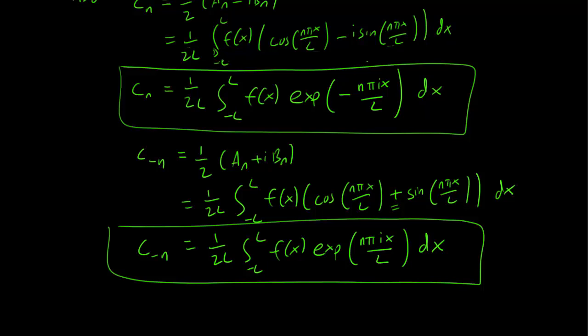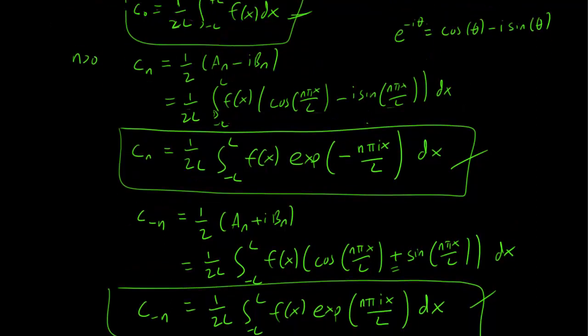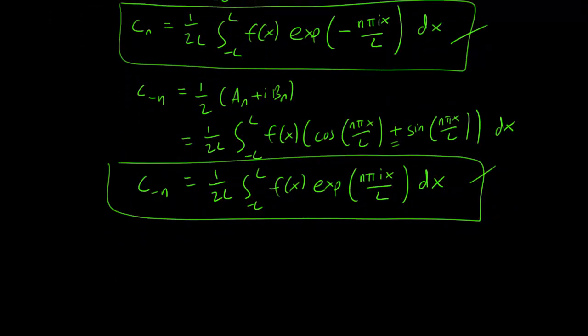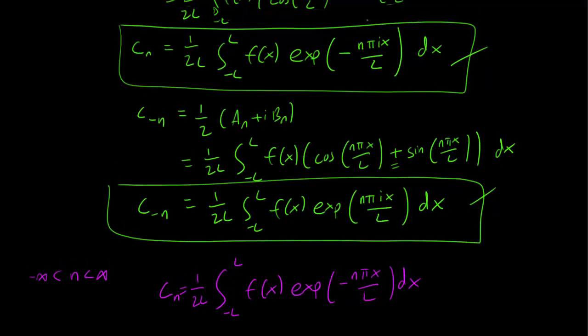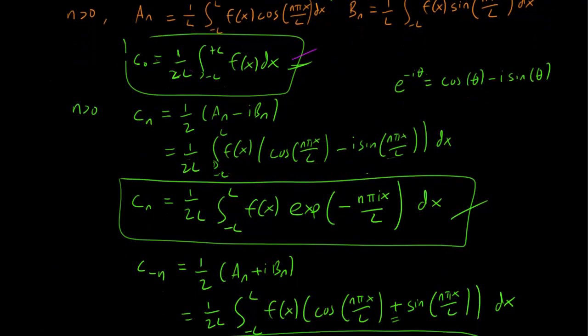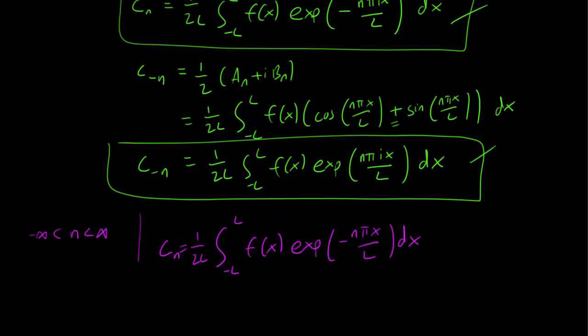But observe that these three formulas can actually be expressed as one thing, one formula. We can rewrite everything as for n going from -∞ to ∞ for every n. We can get Cₙ = 1/(2L) ∫₋ₗˡ f(x)*exp(-nπix/L)dx. And this fits all three cases. If n is positive, we get exactly the same formula as we did before. If n is negative, we should get a positive exponential, and we do when that happens. So n is negative here, so the negatives cancel out. And when n is zero, we have the exponential term disappearing, so we just get f(x). So it's nice that for the complex Fourier series, we get one simple formula to calculate the constant.